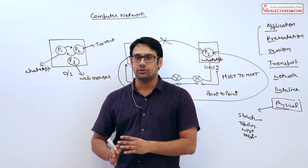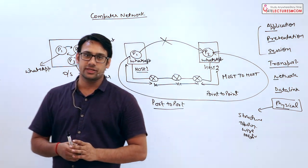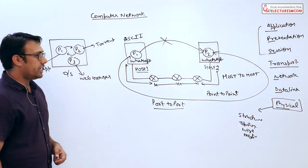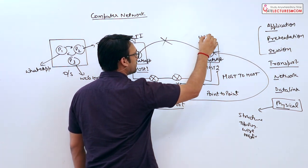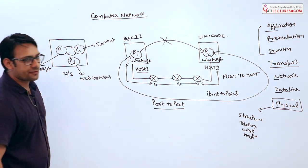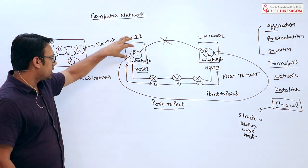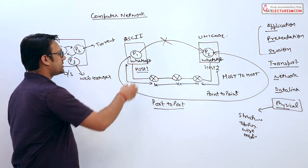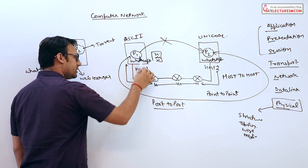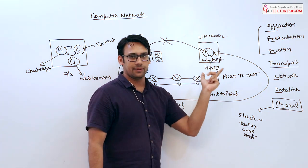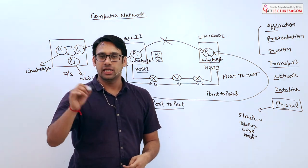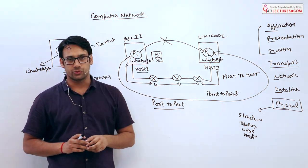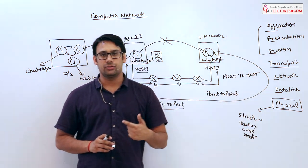The Session layer deals with sessions, and the Presentation layer deals with how data is presented from one format to another. For example, if one host is using ASCII code to represent data and another host is using Unicode, the data needs to be translated. If this host sends 'Hi, my name is Himanshu,' the receiving WhatsApp should display exactly the same text without changing the letters or words. That conversion is handled by the Presentation layer.